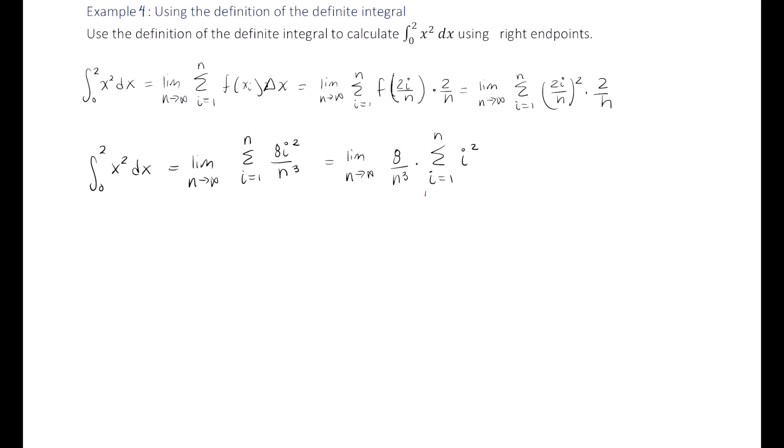And then you may not have seen this before, so I'm going to put this here as an aside. And some of you might have seen this in your pre-calculus class. Some of you might not. It all depends on where you took pre-calculus. But this sum, the sum from i equals 1 to n of i squared can be shown to be n times n plus 1 times 2n plus 1 divided by 6. So let's do that. So I have the limit as n approaches infinity of 8 over n cubed times n times n plus 1 times 2n plus 1 divided by 6.